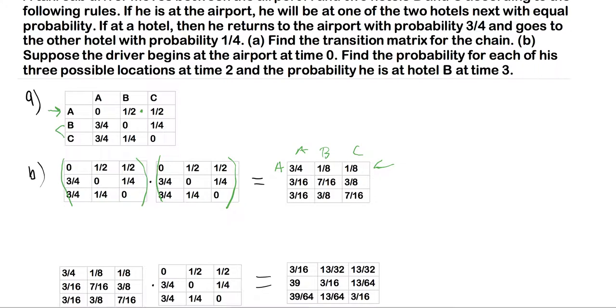So the probability for the possible location at time two of being at the airport is then three-fourths. The probability of being in hotel B is one-eighth. And then likewise, we have C is one-eighth as well. So the answer for each of these three probabilities is right here. Because what we have here is P times P equals P squared. And P squared is exactly how you get this jump from time zero to time two in the problem.